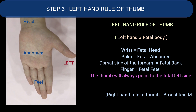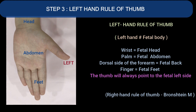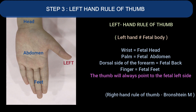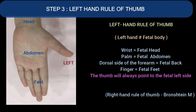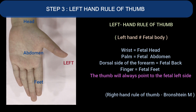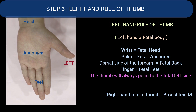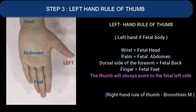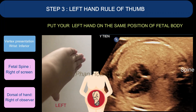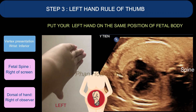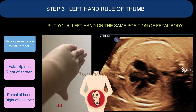The palm will be equal to the fetal abdomen, the dorsal side of the forearm will be equivalent to the fetal back, and the fingers will be the fetal feet. Please note that the thumb will always point to the fetal left side. Put your left hand in the same position as the fetal body.